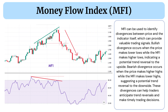Bearish divergence occurs when the price makes higher highs while the MFI makes lower highs, suggesting a potential trend reversal to the downside. These divergences can help traders anticipate trend reversals and make timely trading decisions.